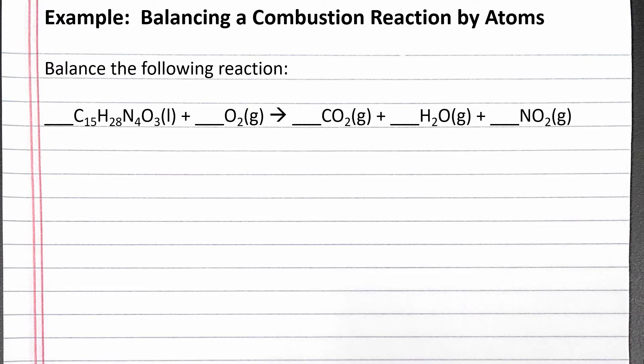Since we have molecular compounds, we can balance this reaction by atoms. We want to balance carbon, hydrogen, nitrogen, and oxygen atoms. We should balance any elements that show up in the equation as free elements last, so we will balance oxygen last since it shows up as just O2 gas. We want to start balancing any element that shows up in only one place on each side of the reaction first.